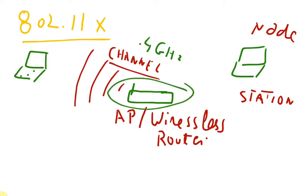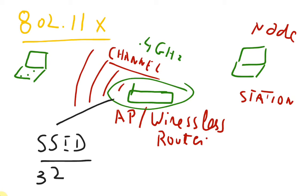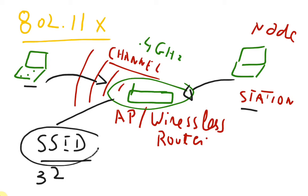To identify routers or access points, we need an SSID. SSID stands for Service Set Identifier — it is the name of your wireless network, a unique 32-character name. The SSID differentiates one wireless LAN from another, and all stations try to access a router with the same SSID.